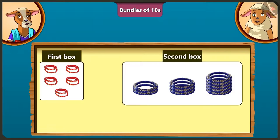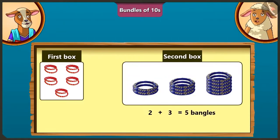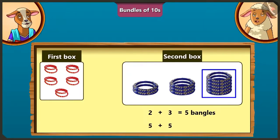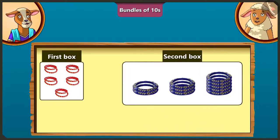Now I will count the second box the same way. There will be 5 bangles if we add 2 bangles of the first row and 3 bangles of the second row. And if we add 5 bangles of the third row to these 5 bangles, then there will be total 10 bangles in the second box.